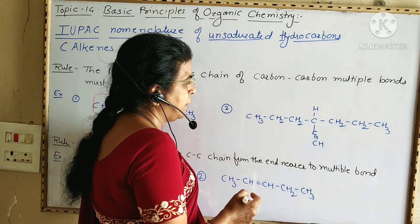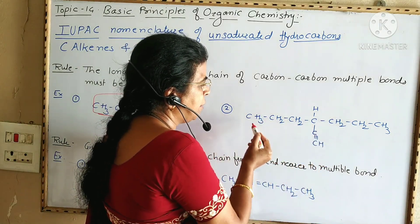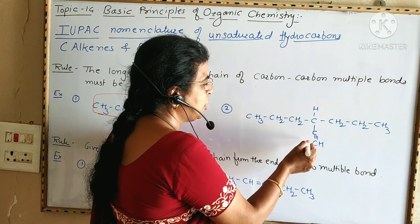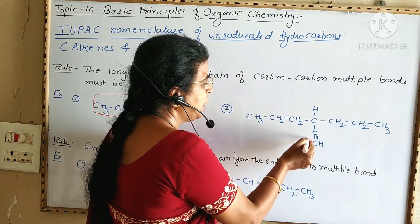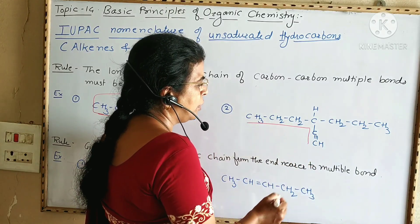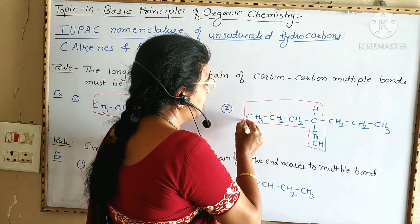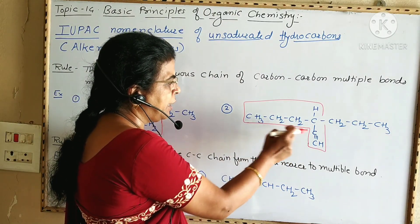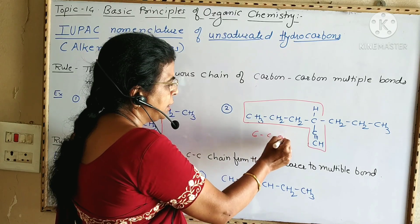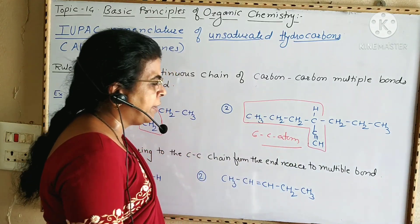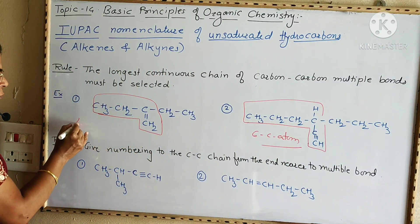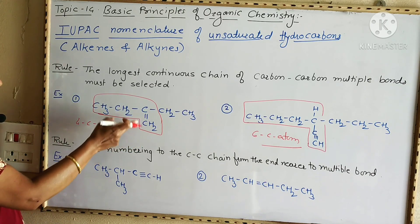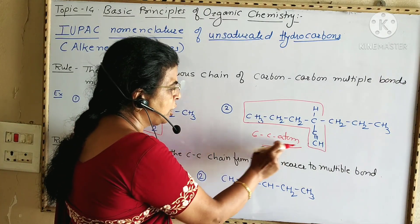In the second example, there are seven carbon atoms in a continuous chain, but there is no carbon-carbon double or triple bond. However, if we consider the chain of six carbon atoms, it contains a carbon-carbon triple bond. Therefore, this chain is selected. The parent alkane for the four-carbon chain is butane, and for the six-carbon chain it is hexane.